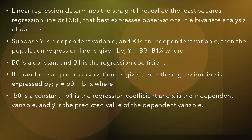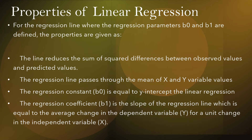The properties of linear regression, where regression parameters b0 and b1 are defined, are as follows: the line minimizes the sum of squared differences between the observed and predicted values; the regression line passes through the mean of x and y variable values; the regression constant b0 equals ȳ; and the regression coefficient b1 is the slope of the line, equal to the average change in y for a unit change in the independent variable x.